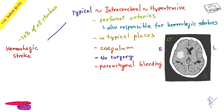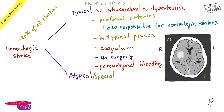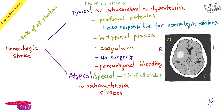In terms of statistics: 80% of strokes are ischemic, about 11% are these typical hypertensive hemorrhagic strokes, and then there are about 7% of special ones — these are called subarachnoid strokes.